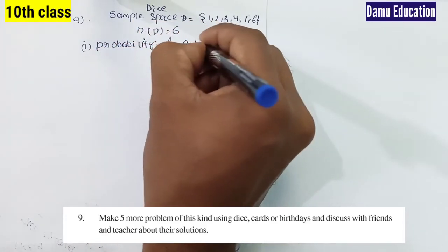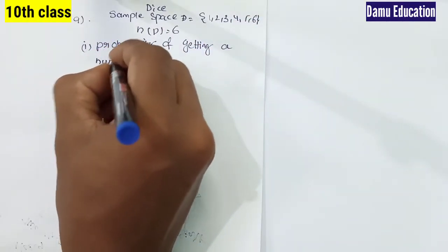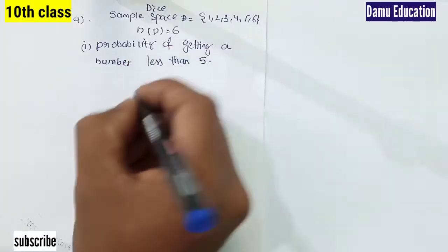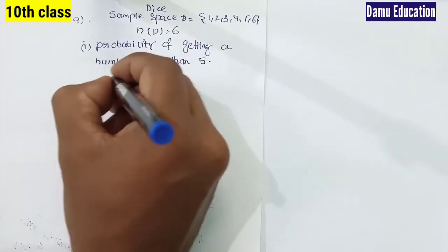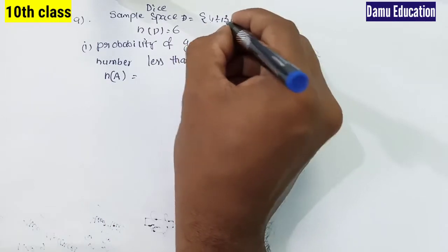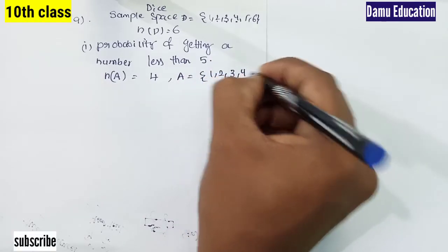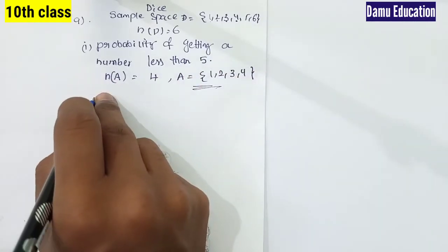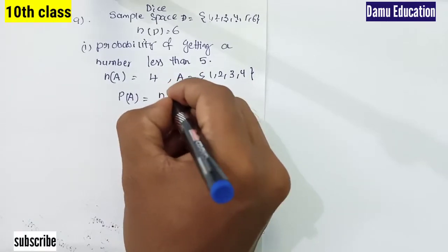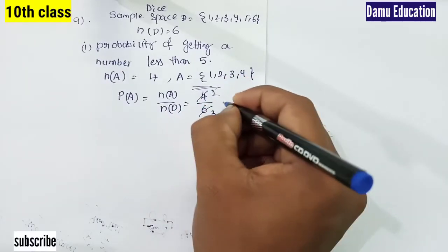Less than five means the favorable outcomes are A = {1, 2, 3, 4}, which gives us four numbers. So P(A) = number of favorable outcomes / total outcomes = 4/6 = 2/3.